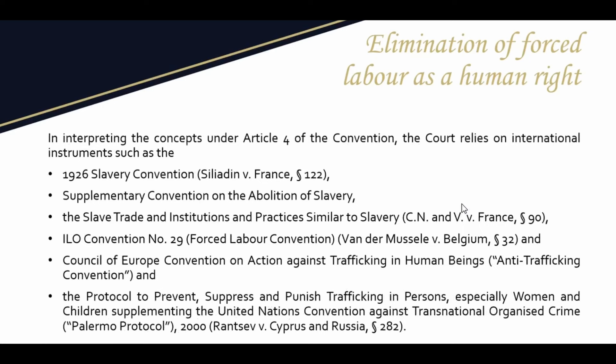In interpreting the concepts under Article 4 of the convention, the court relies on different international instruments. These include the 1926 Slavery Convention, the Supplementary Convention on the Abolition of Slavery, the Slave Trade and Institutions and Practices Similar to Slavery, ILO Convention No. 29, the Council of Europe Convention on Action Against Trafficking in Human Beings, and the Palermo Protocol — again in connection with trafficking.